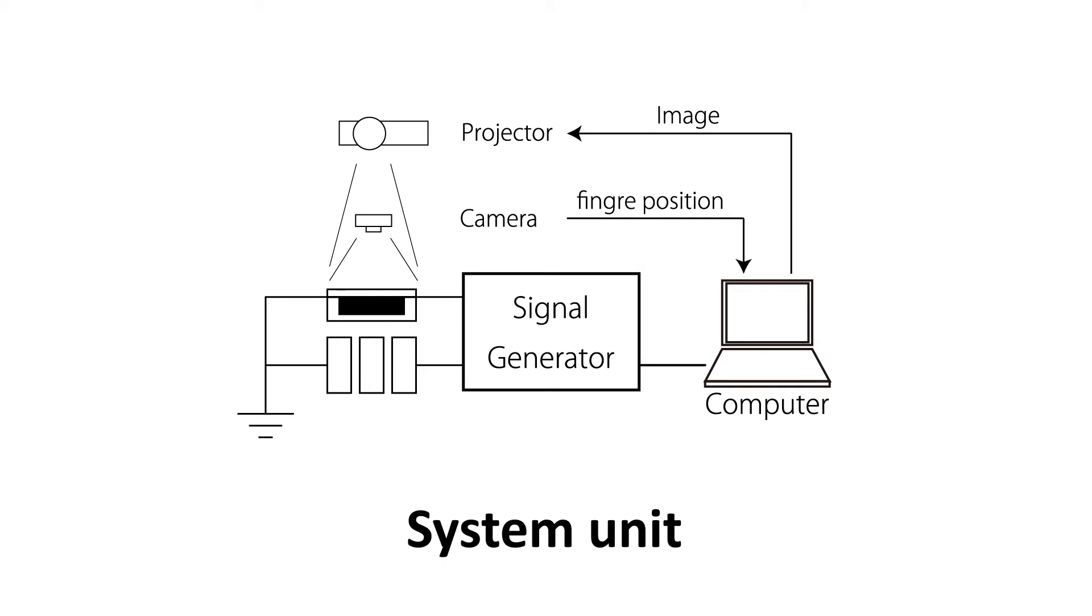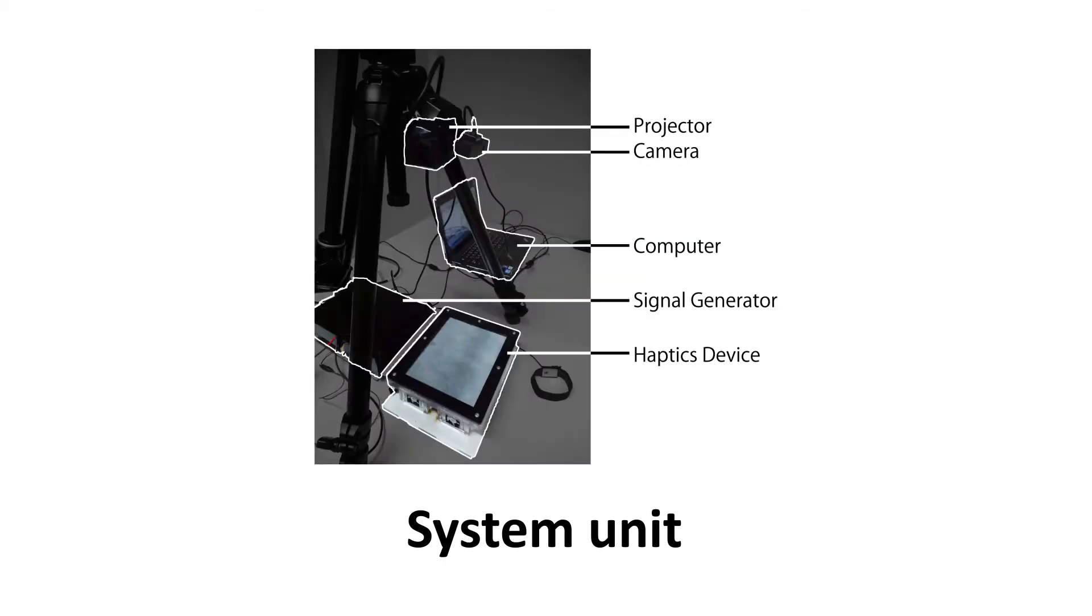A finger with an attached marker is tracked with a camera and the tracking position is used as input. A projector sends the image to the device based on the location of the tracked finger.